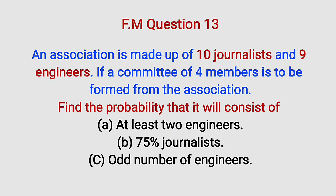Here is question number 13 of WIAC 2025 for our mathematics examination, the theory questions. An association is made up of 10 journalists and 9 engineers. If a committee of four members is to be formed from the association, we are asked to find the probability that it will consist of at least two engineers, 75% journalists, and an odd number of engineers.